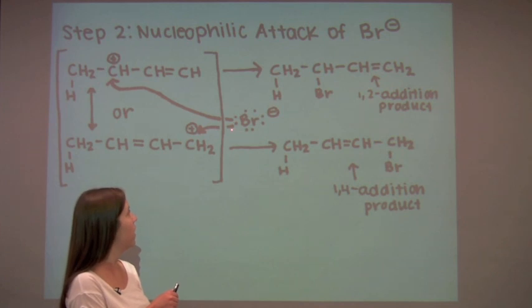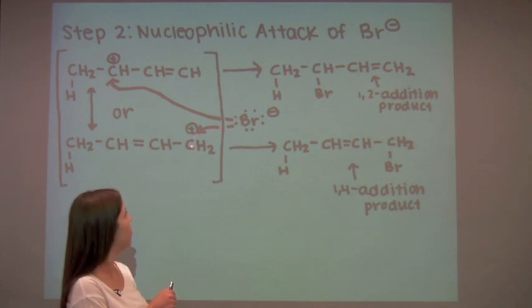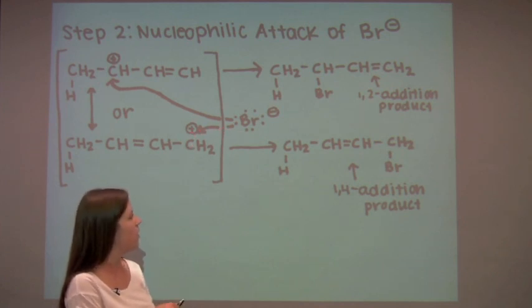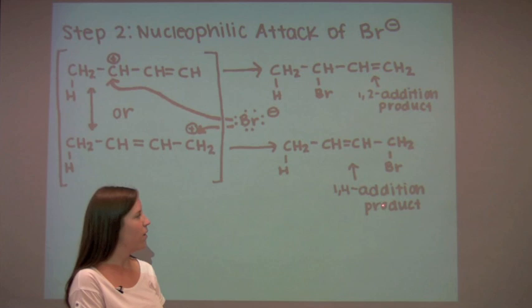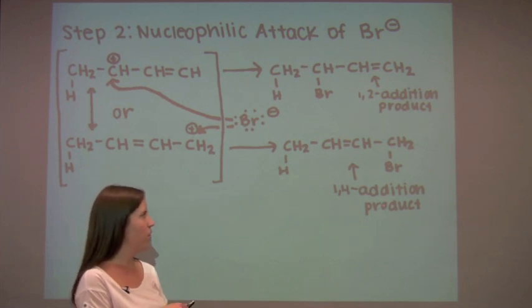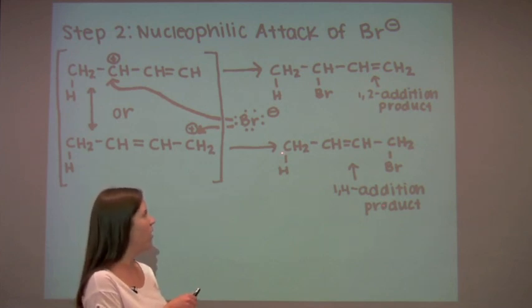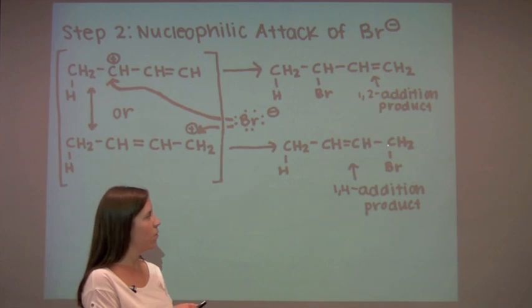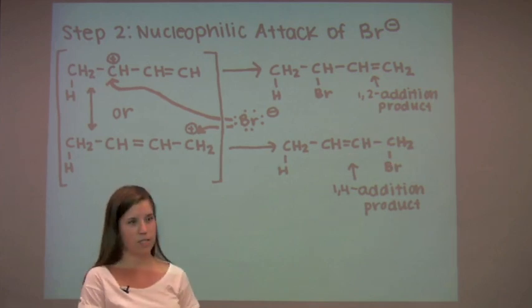Alternatively, if it chooses to attack the fourth carbon where the positive charge is located, it will result in the 1,4 addition product, where hydrogen is located on the first carbon, bromine is on the fourth carbon, and the pi bond is in between the second and third carbons.